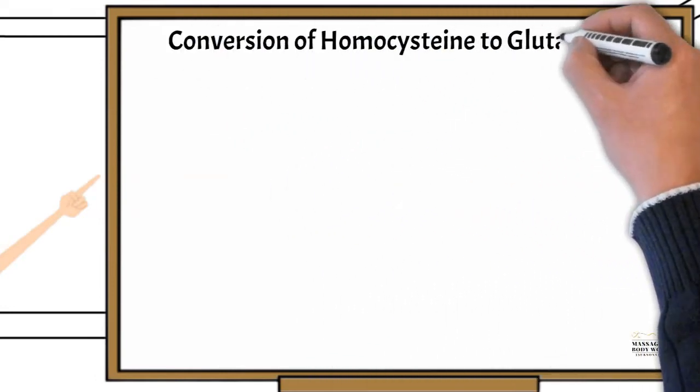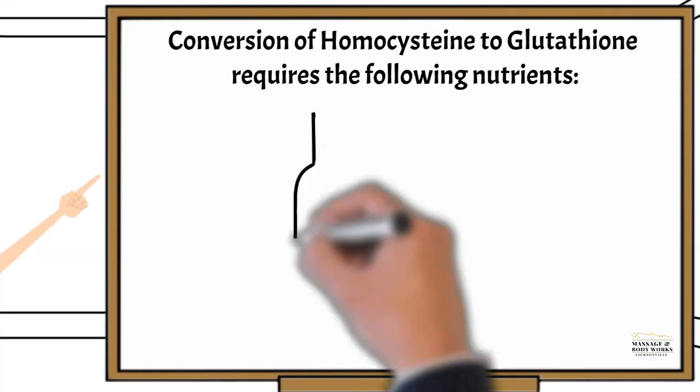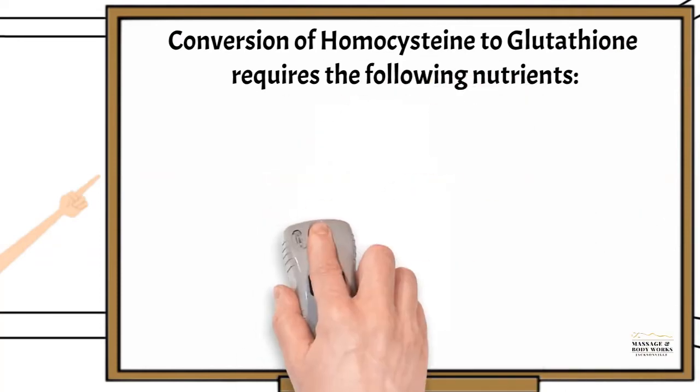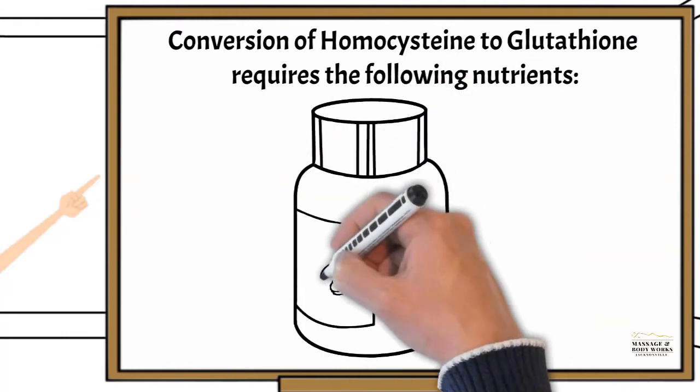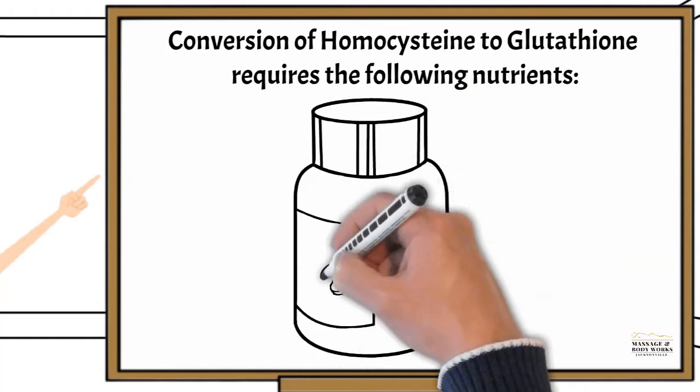And conversion of homocysteine to glutathione requires the following nutrients: Number 1, Vitamin B6; Number 2, Vitamin B2; Number 3, zinc.